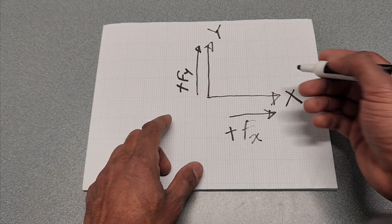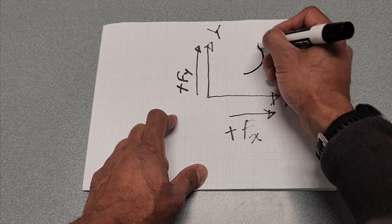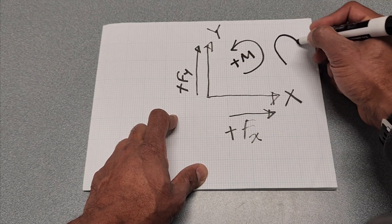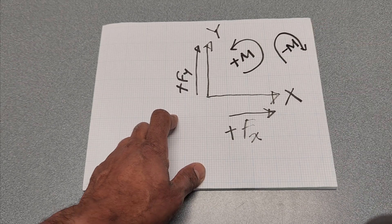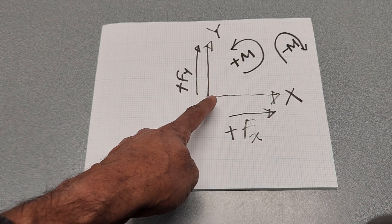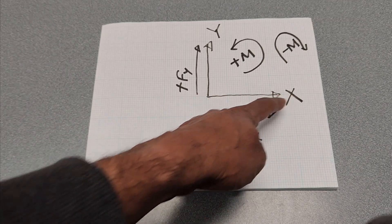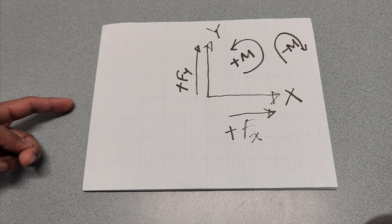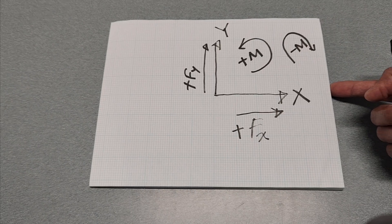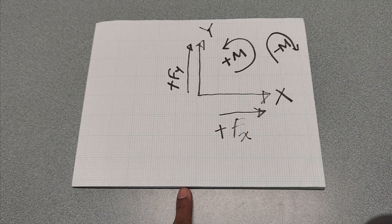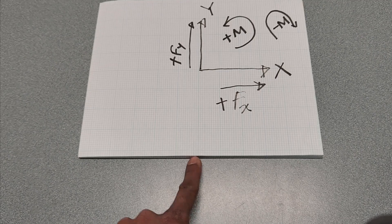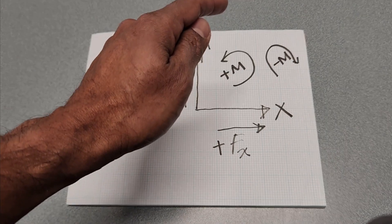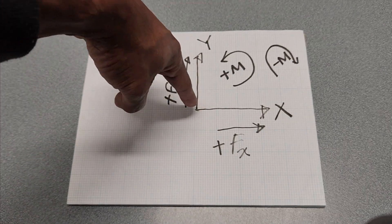Moment has nothing to do with force direction. The counterclockwise moment is considered positive and the clockwise moment is considered negative. Force simply follows the direction of the axis — if I push in the positive x-direction, that's a positive force; if I push in the negative x-direction, that's a negative force. Upward is positive force, downward is negative force — which has nothing to do with the moment directions.